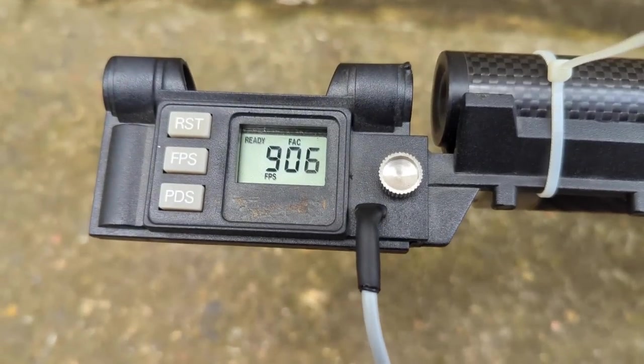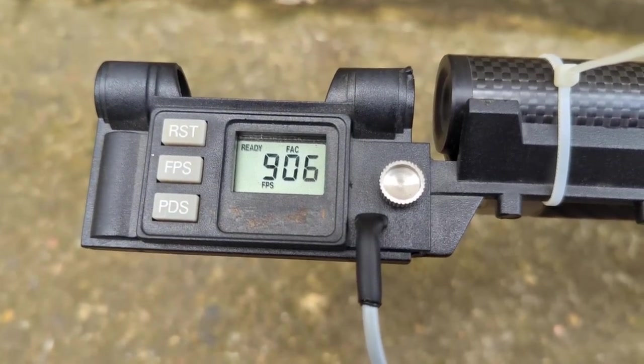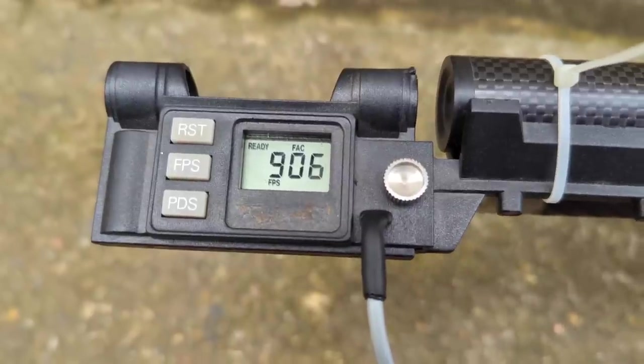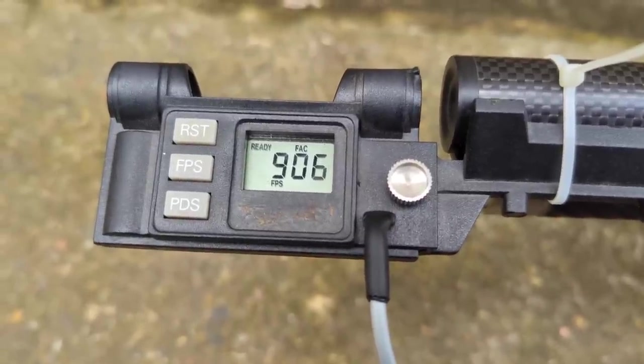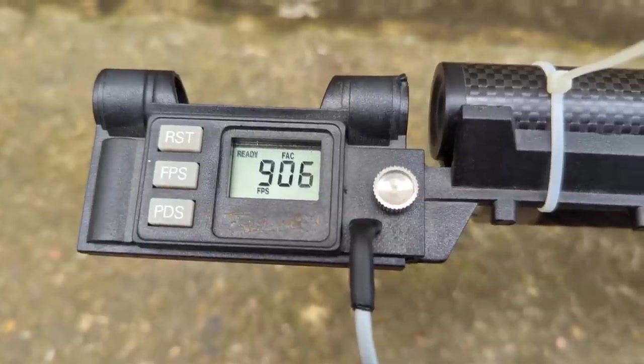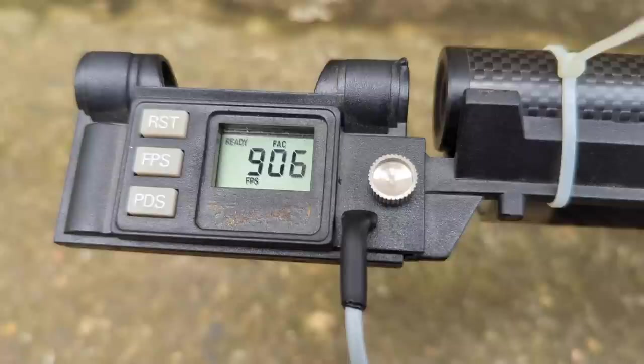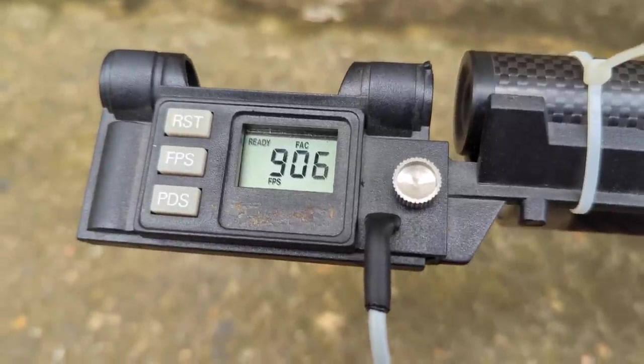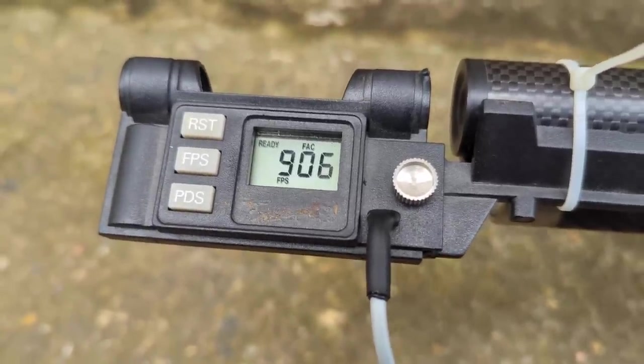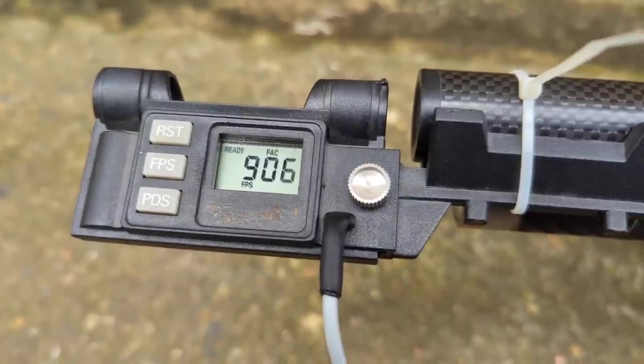Right, second shot then over the Combro, 906 feet per second, exactly. Same as the first couple of shots. So the 9015 is incredibly consistent. So 905, 906 at 5.71 grains is about 10.5 foot pound just under. So that gives us a benchmark to work with. I'm going to swap over now to the JSBs and we'll do the same again.